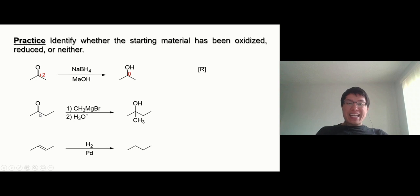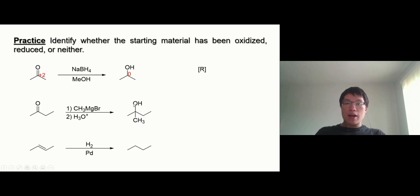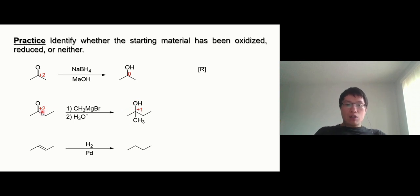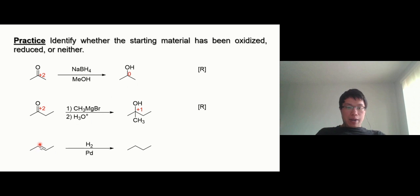Next one — if you can guess first: there's a double bond to oxygen, two bonds to oxygen, one bond to oxygen. We're removing oxygen, so this looks like a reduction reaction. Let's verify: the carbon on the left is bonded to another carbon (no change) and two oxygens, giving plus two. The carbon on the right is bonded to three other carbons (no change) and one oxygen — loses one electron, plus one. The oxidation number decreased, confirming it's a reduction reaction.